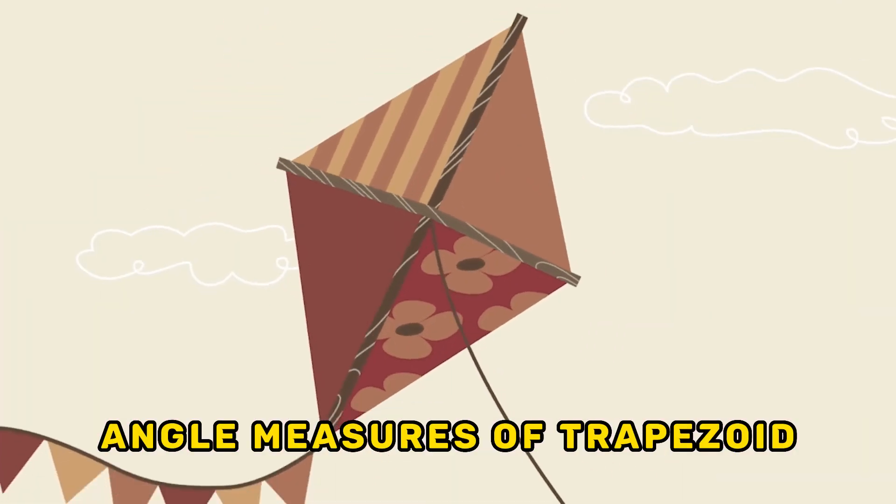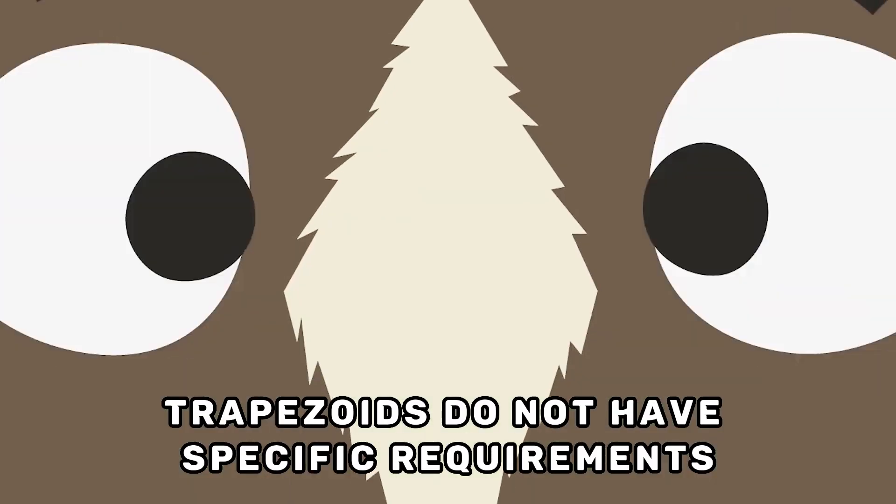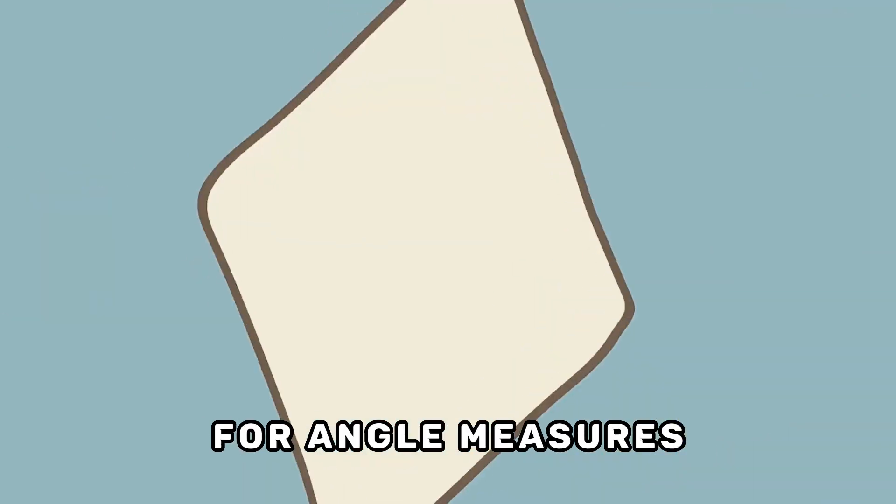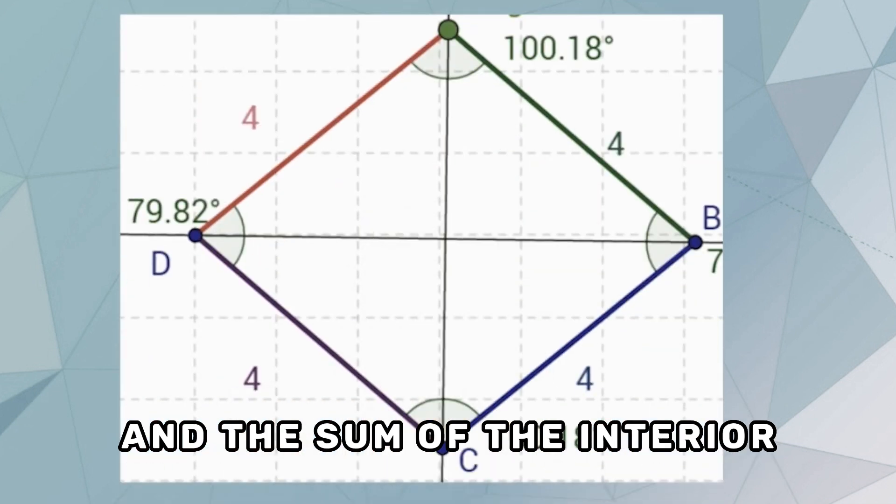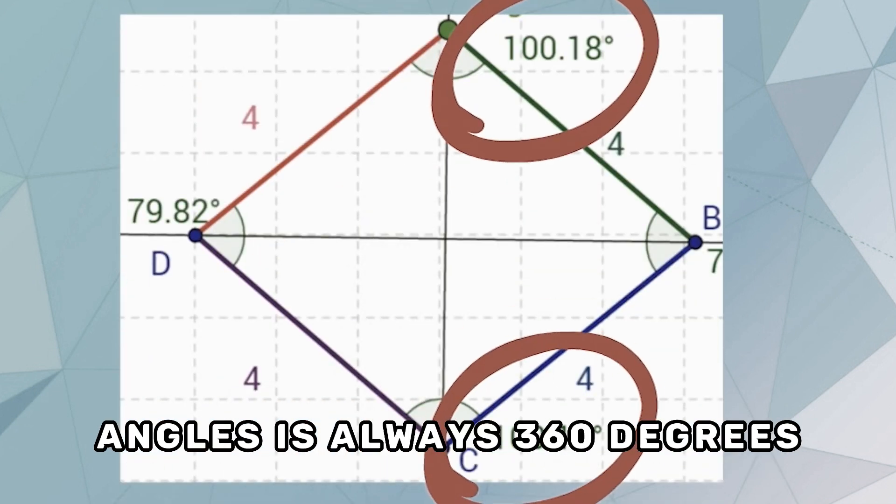Angle measures of trapezoid: Trapezoids do not have specific requirements for angle measures. The angles formed by the intersecting sides can vary, and the sum of the interior angles is always 360 degrees.